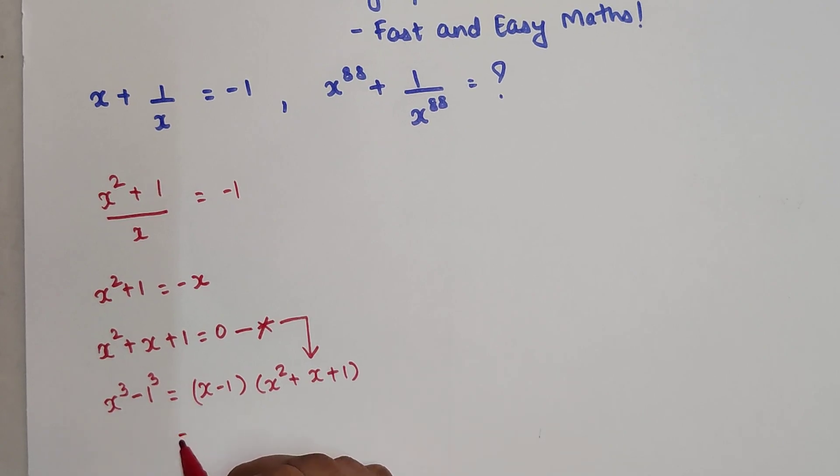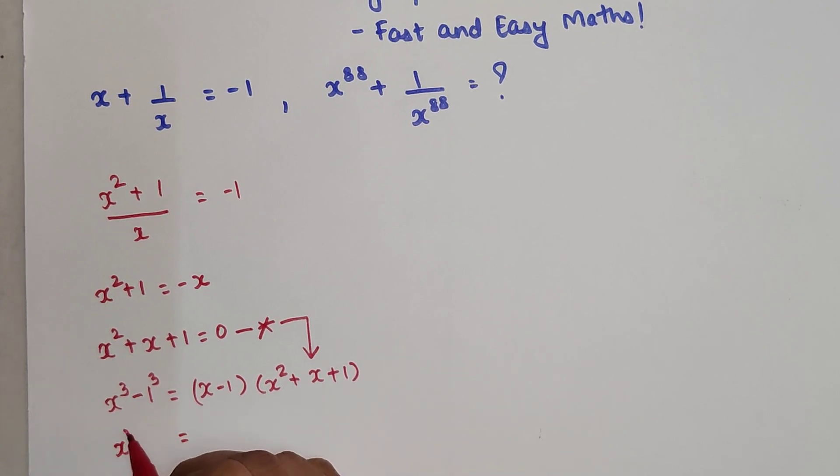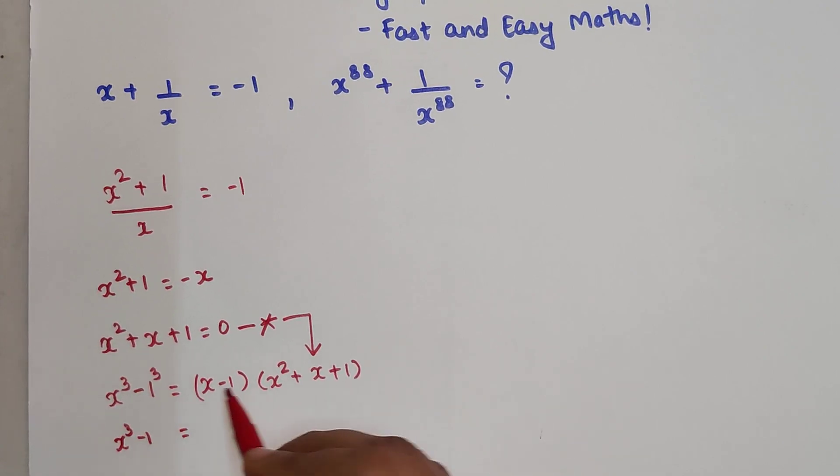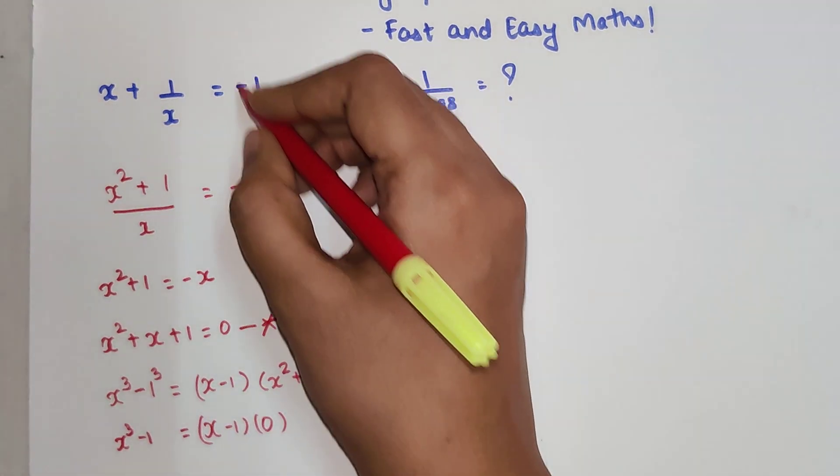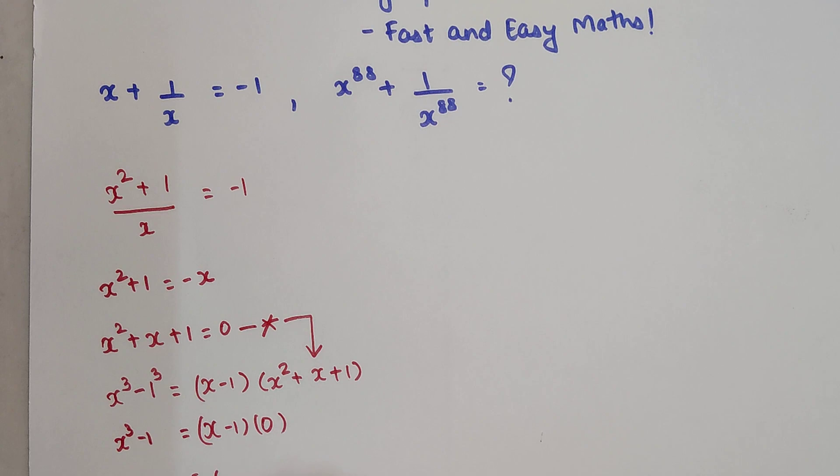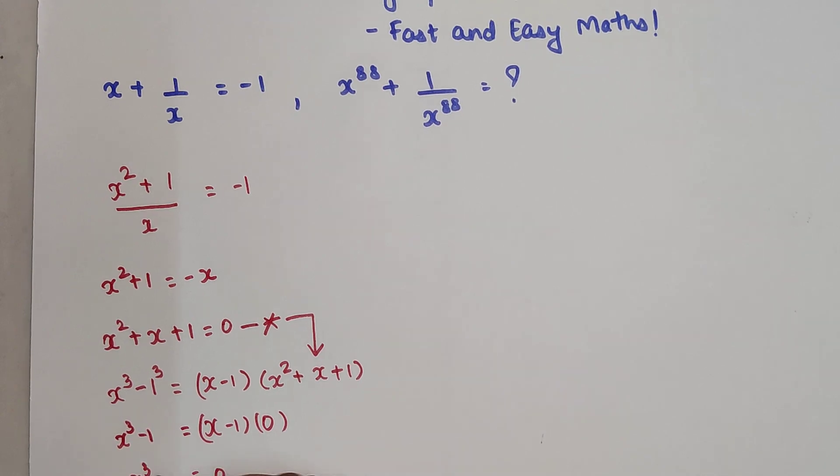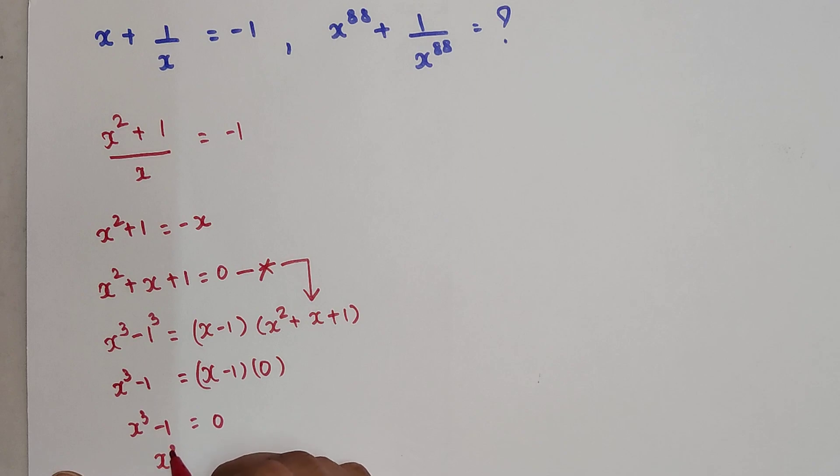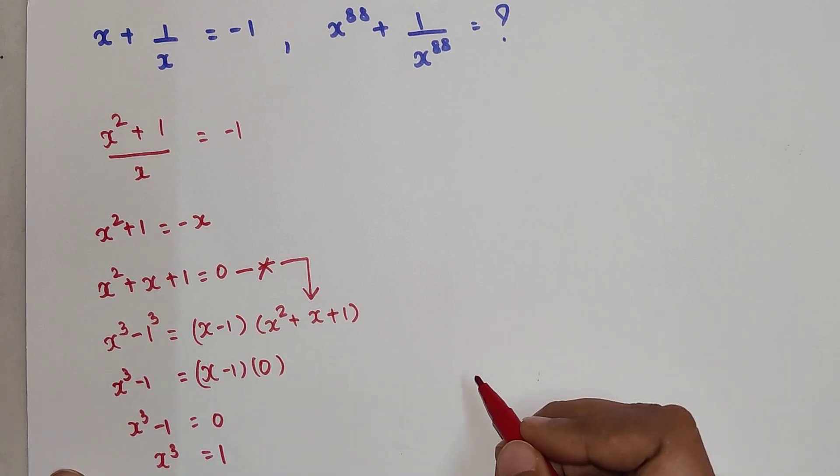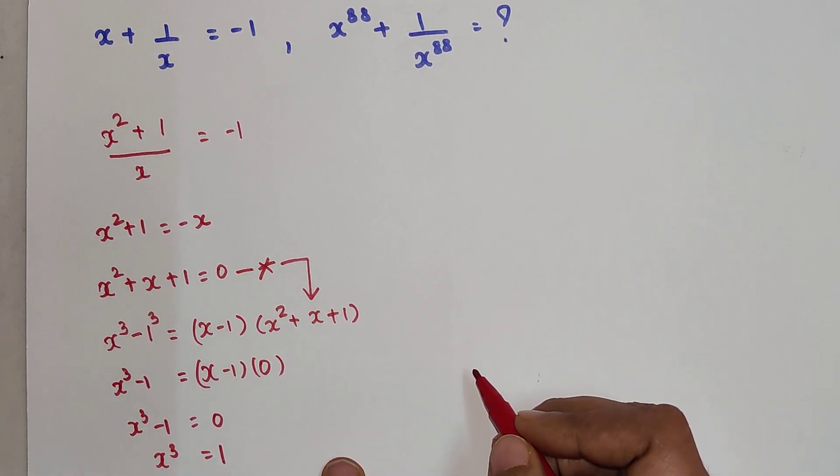So now I can write this as x³ - 1, and instead of this bracket I can write it is equal to 0, which we have derived from the top. So x³ - 1 = 0, which means x³ = 1.